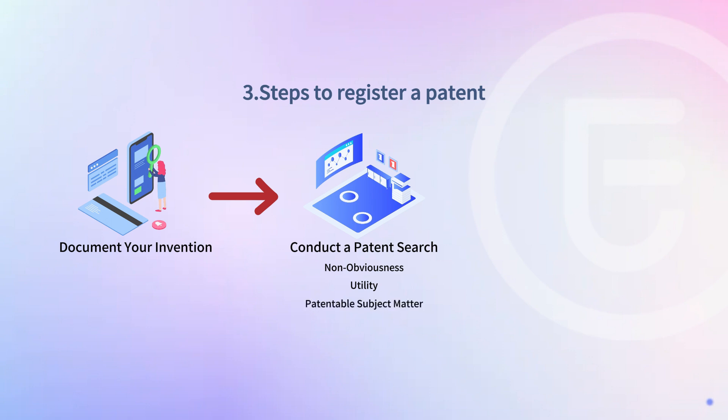Regarding patentable subject matter, the invention must fall within the categories of patentable subject matter, which generally include processes, machines, manufacturers, compositions of matter, or any new and useful improvement thereof. Additionally, enablement requires that the patent application must teach others how to make and use the invention without undue experimentation.